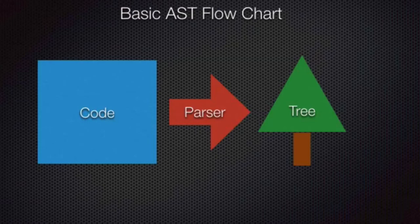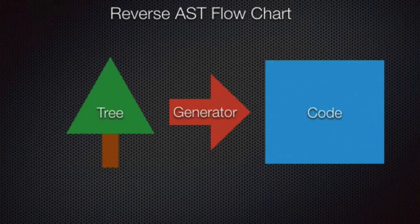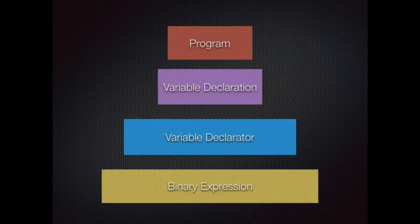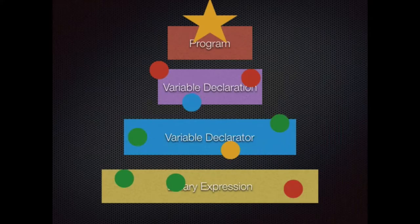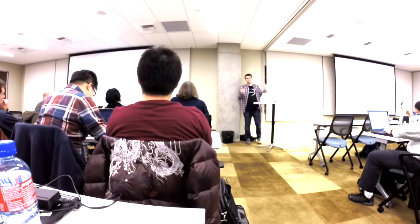We talked about our AST flowchart before — code into tree. The way transforms work is sort of the reverse: you take your tree, stick it through a generator, and get some code out the other side. So you go code to parser to tree, then to generator, and back to code. It's this full circle thing. What that means is if you have your tree, you can go in and decorate it — soup up your tree — and then export it out to some code, and your code will be super code. Tools like JSCodeShift and Babel give you special tools to go in there, modify your tree, and do fancy things.